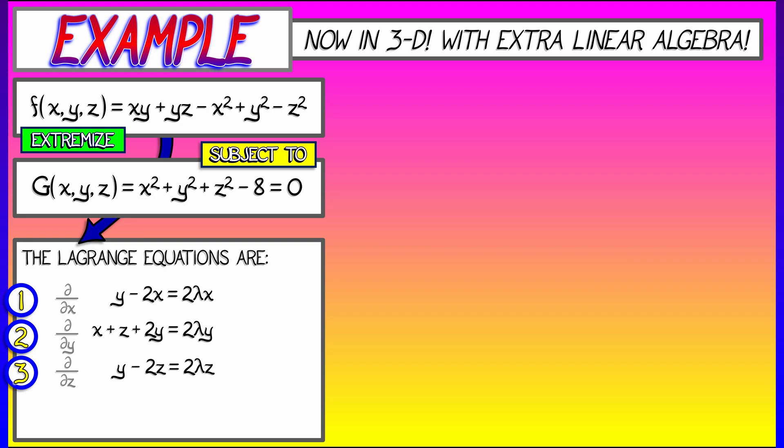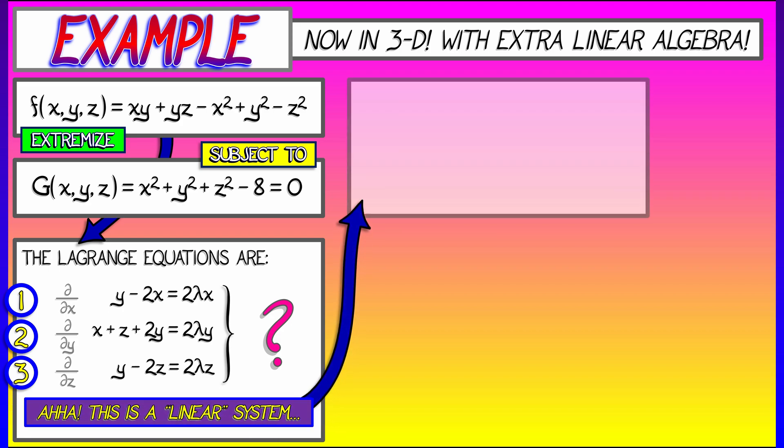Now, what do we have? We have three equations, four unknowns. Man, that does not look like fun. How are we going to solve that? That's a lot of algebra. Hey, wait. We know something about algebra when it's linear algebra, and this looks like a linear system.